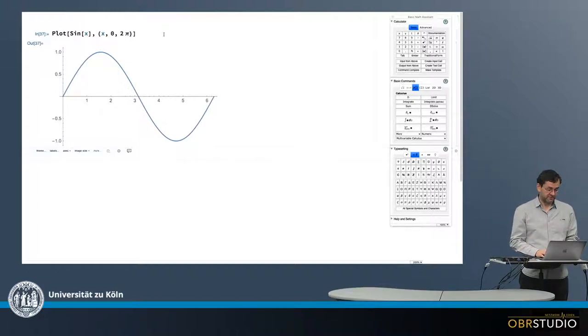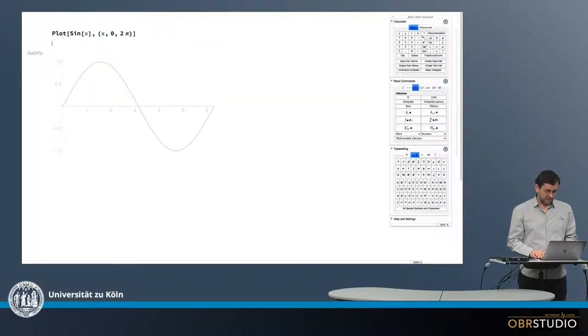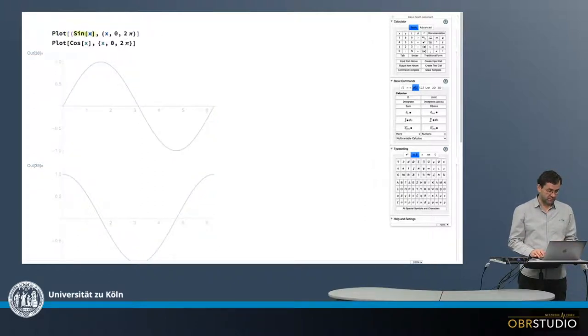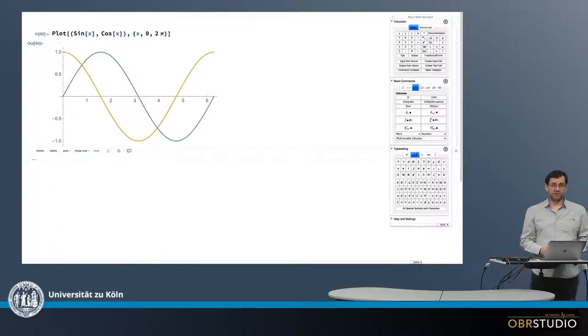And I also want to have the cosine, so I copy this below here, show cosine. And then I have the cosine, but in two different plots, and I want it in one plot, which I can do. I make a list with these brackets and write cosine in here. And then I can delete this one, and now both are shown in one single plot.